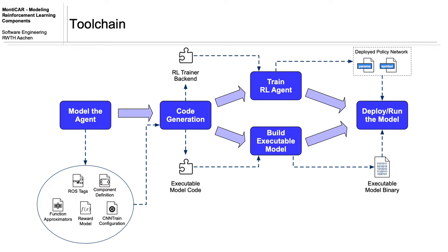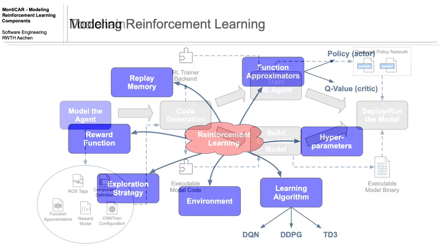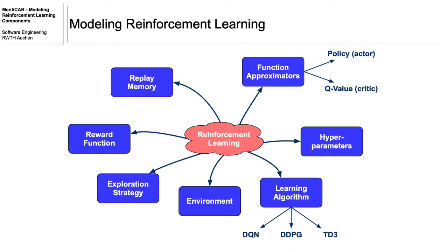On the startup of the executable model, the optimized weights and the architecture description files are loaded. The training of a reinforcement learning agent involves a set of elements that we have to model. In this video, we will give a full example on how to model an agent that is trained with the DDPG learning algorithm. The task of the agent is to control a car in the racing simulator Torx.